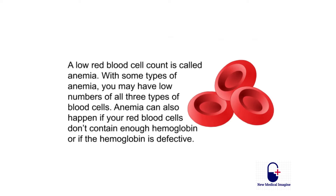With some types of anemia, you may have low numbers of all three types of blood cells. Anemia can also happen if your red blood cells don't contain enough hemoglobin, or if the hemoglobin is defective.